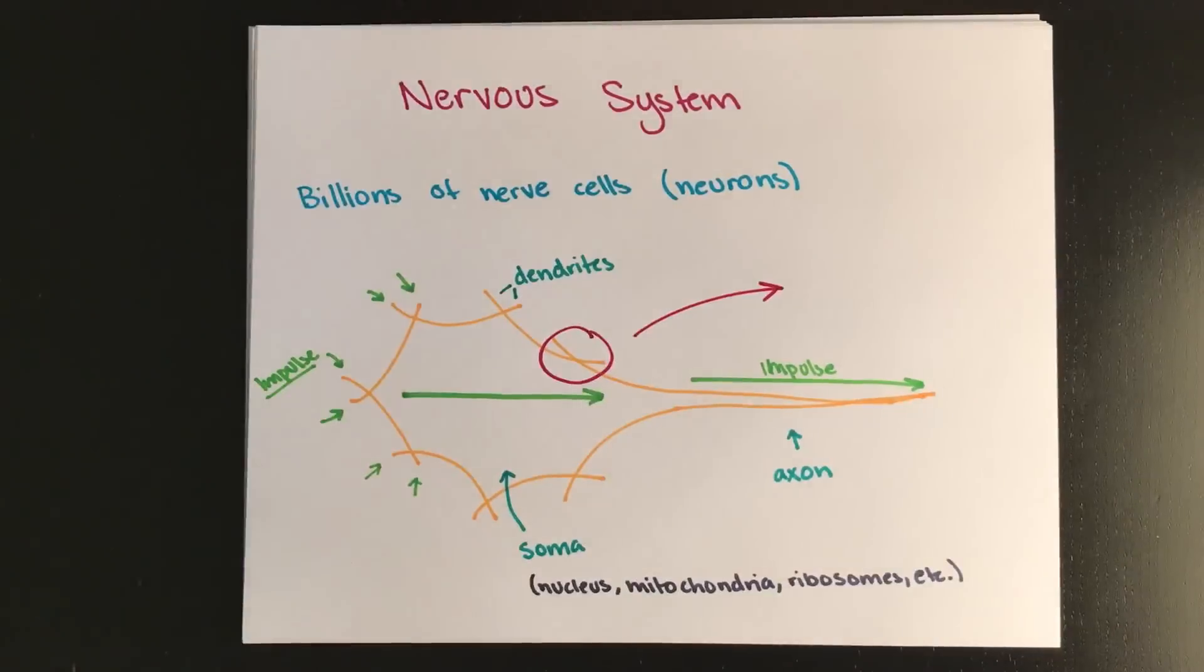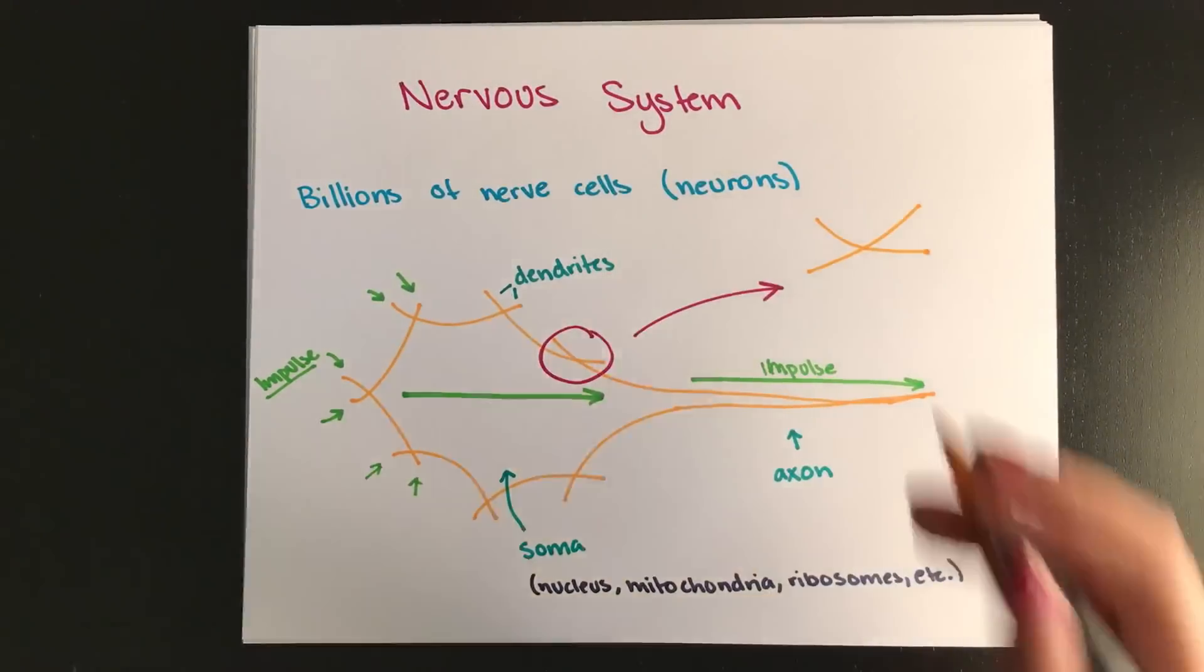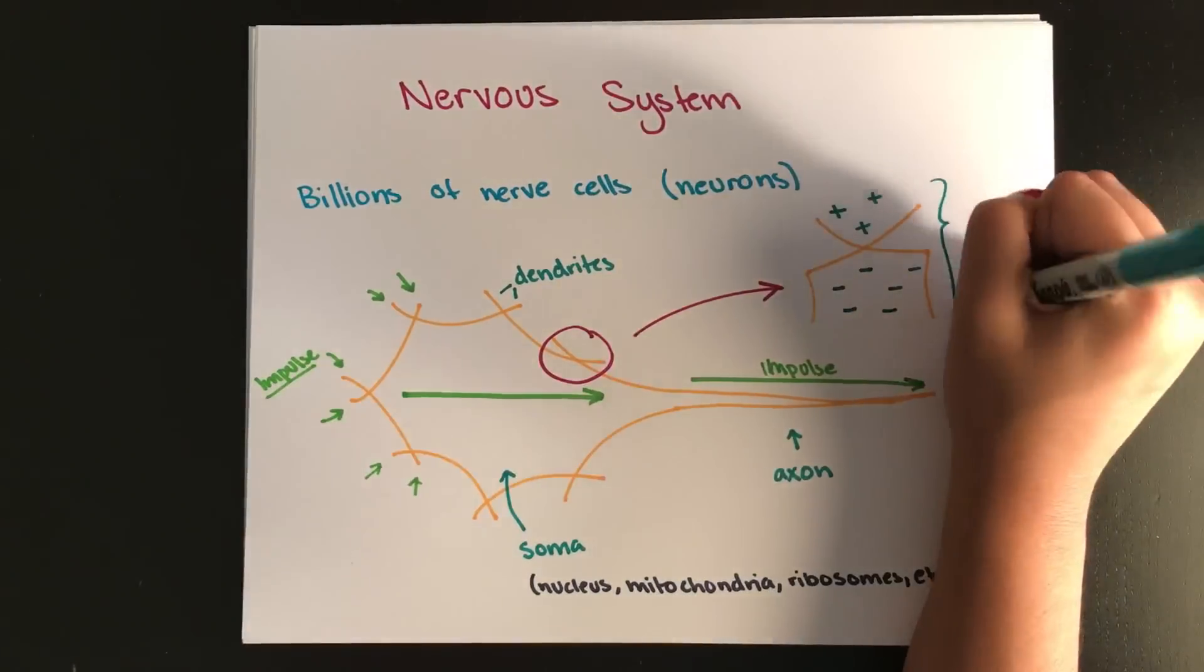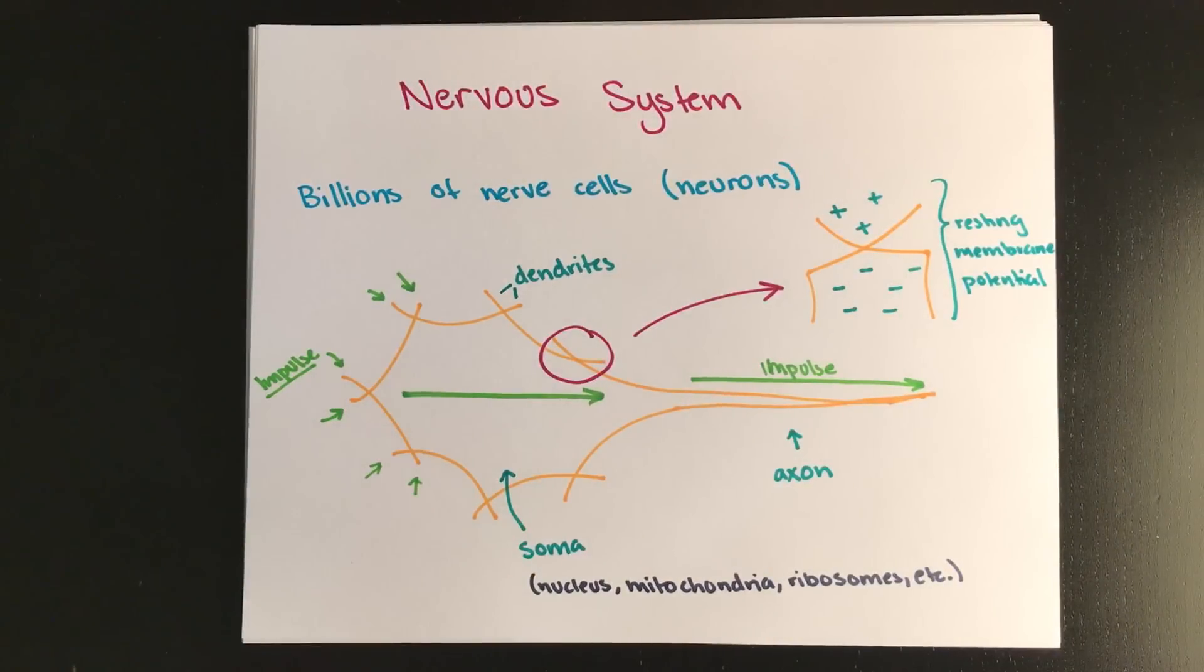When a neuron is resting due to the chemical gradient inside and outside the cell, we can say that the neuron is polarized because the inside is negative and the outside is positive. And this is the resting membrane potential. This is super important to remember. It's usually around negative 70 millivolts. But this idea of polarization is what makes the cell actually conduct these impulses.